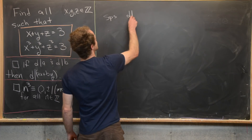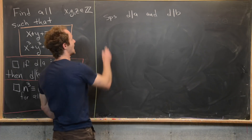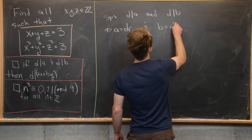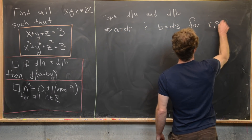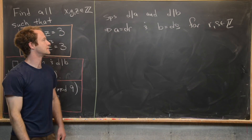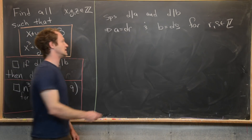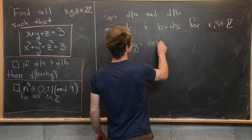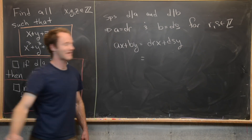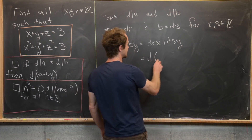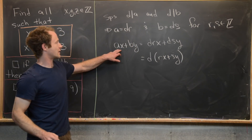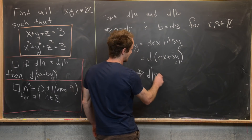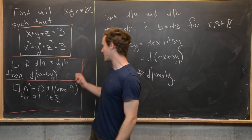Suppose that d divides a and d divides b. That means a equals d times r and b equals d times s for some integers r and s — that's just the definition of divisibility. Now look at ax plus by: we can write that as drx plus dsy, and factoring out d gives d times (rx plus sy). Since we wrote ax plus by as a multiple of d, that means d divides ax plus by. So we've established this first tool.